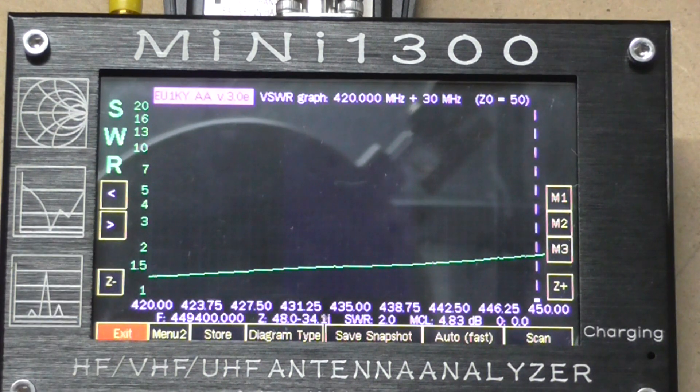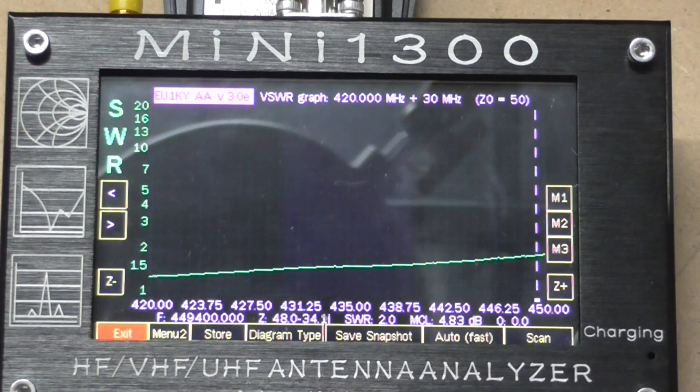Right up the top here, 2 to 1 at 450 megs. Again, 2 to 1 is usable, not something I would really want to be calibrating into, but your mileage may vary. You may prefer or decide that that's fine for you.